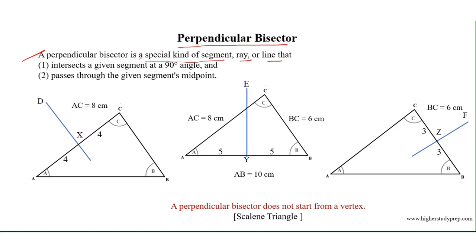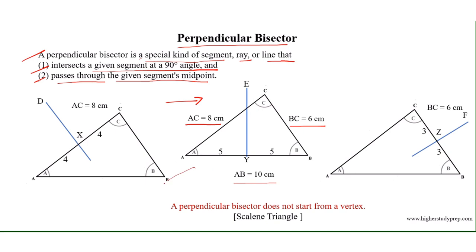Perpendicular Bisector: a perpendicular bisector is a special kind of segment, ray, or line that intersects a given segment at a 90-degree angle and passes through the given segment's midpoint. For example, in triangle ABC where AC equals 8 cm, BC equals 6 cm, and AB equals 10 cm, triangle ABC is a scalene triangle.